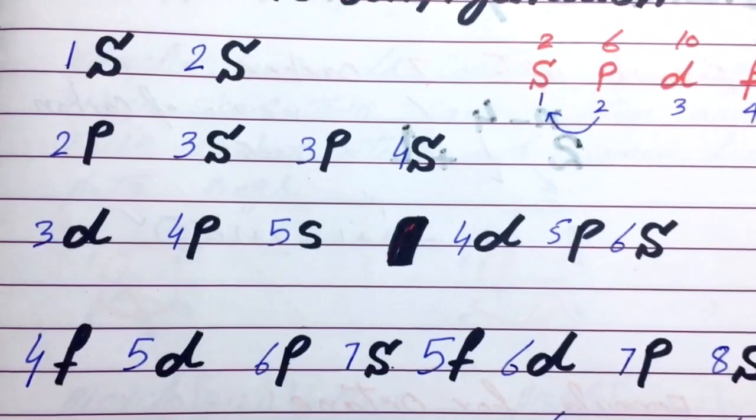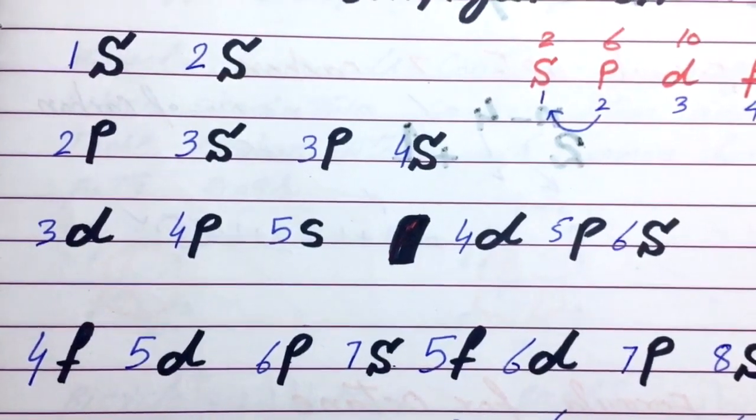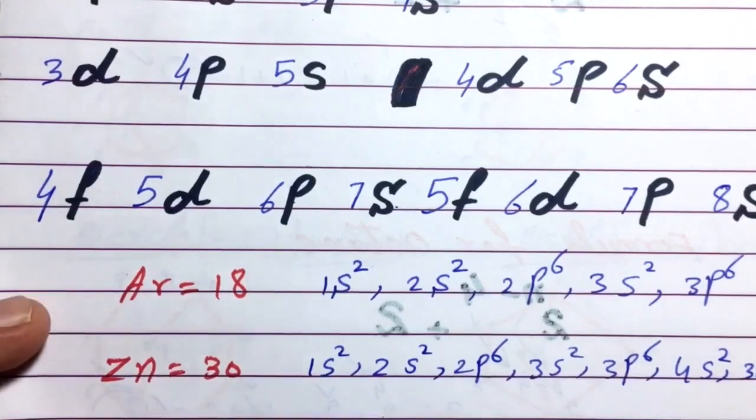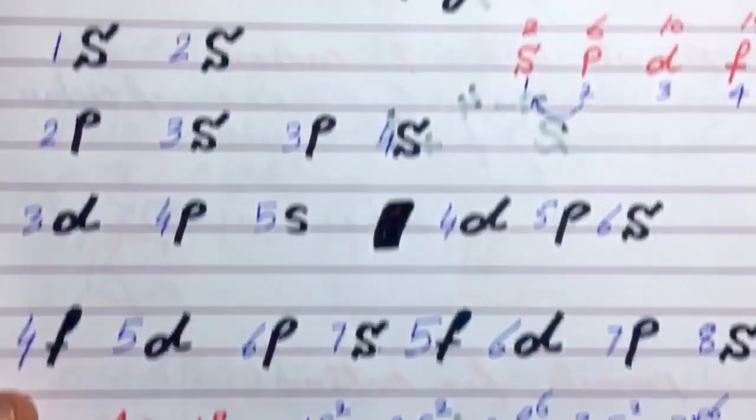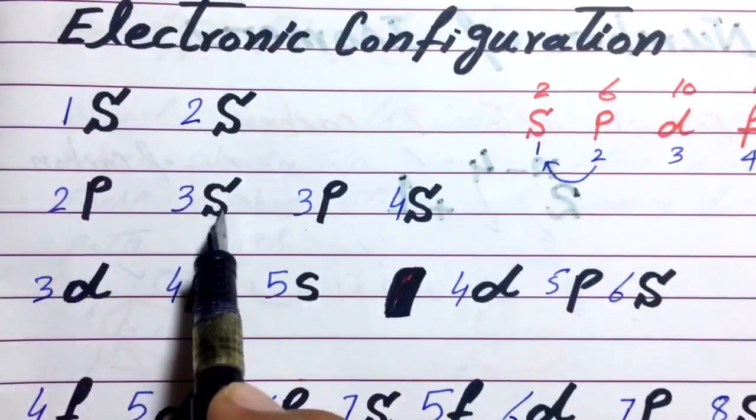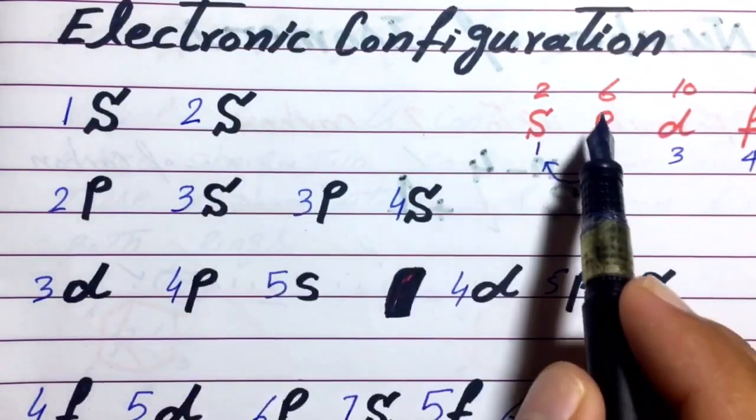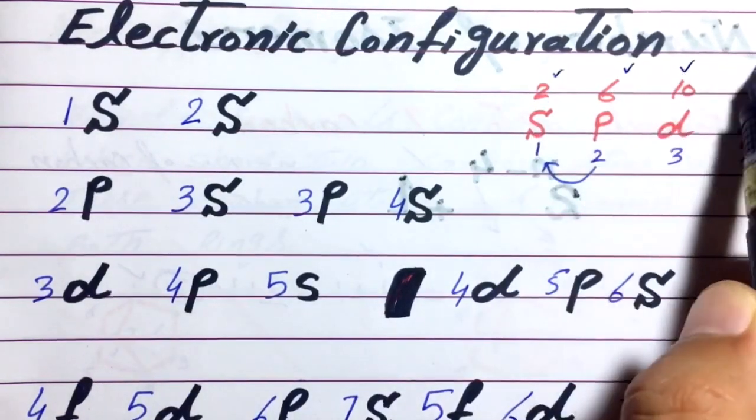Now if we want to calculate electronic configuration of argon, then start from 1S. Here, start from here. 1S, 2S, 2P, 3S, 3P, 4S, 3D, 4P and so on. And put number of electrons 2, 6, 10 and 14.